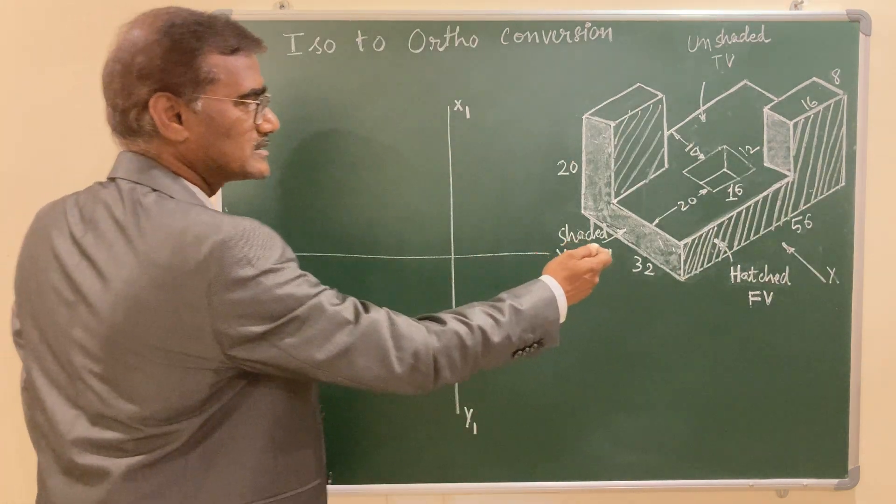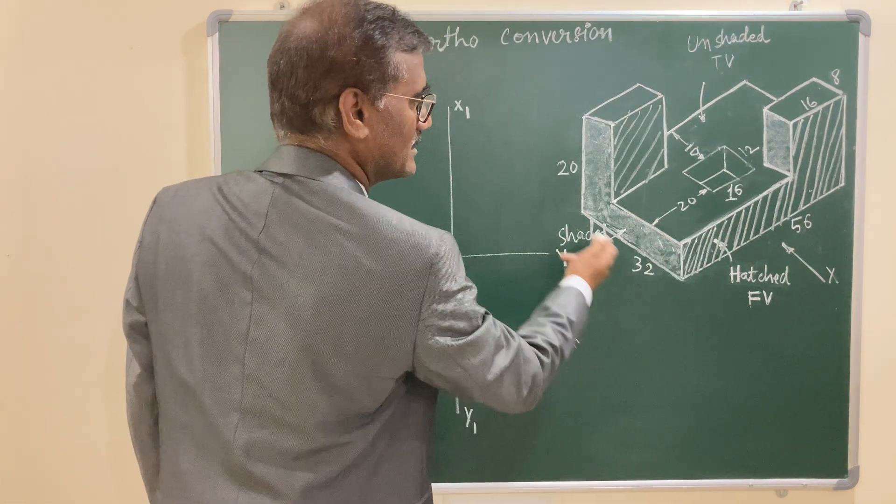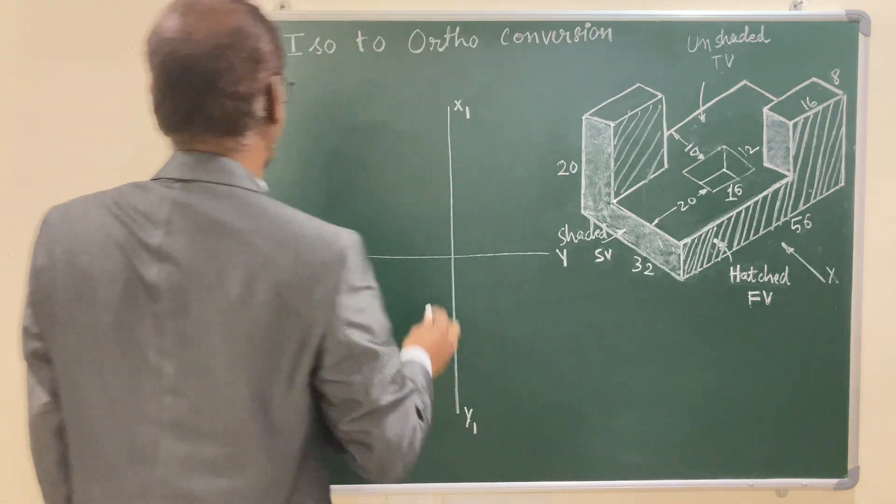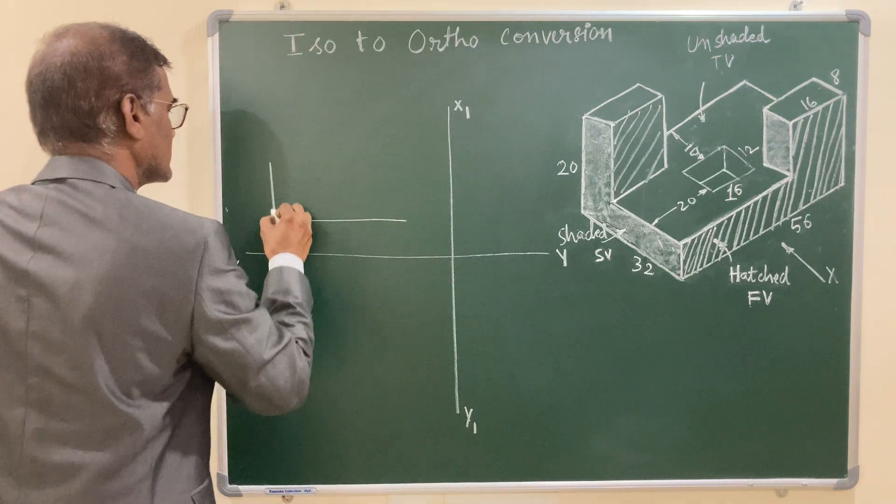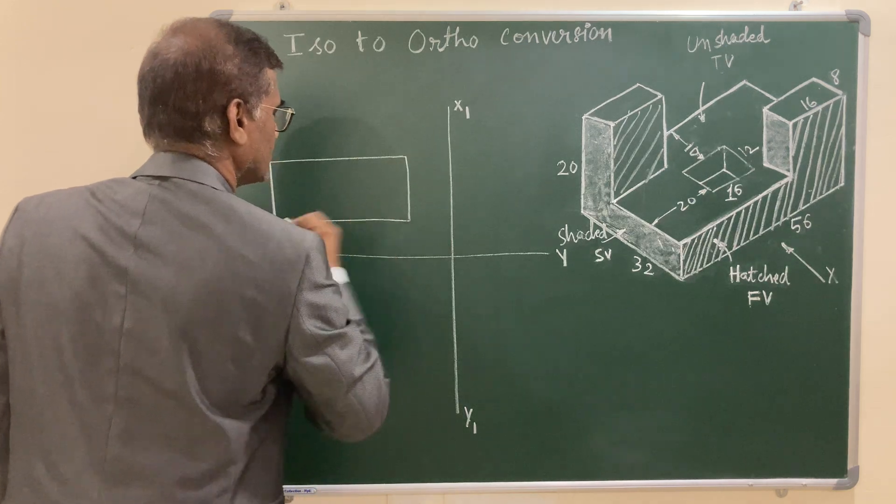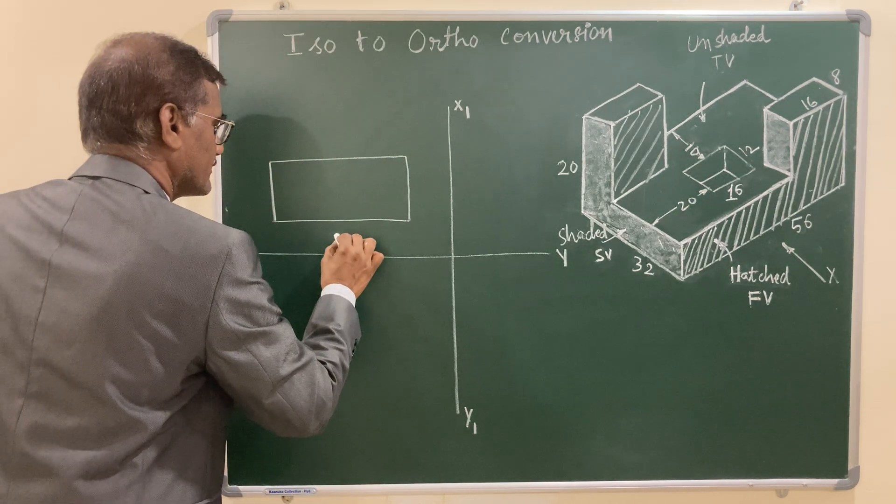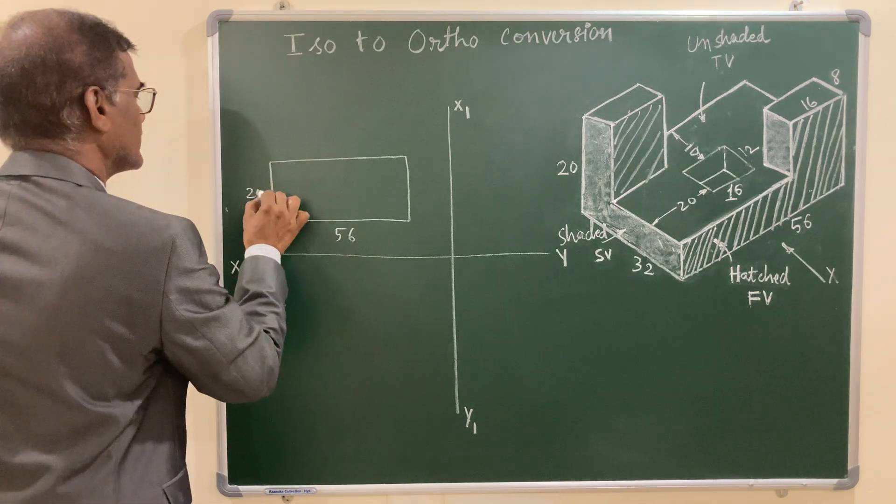And the dimensions, if you see in front view, the length is 56 and height is 20 mm. So here it is 56, it is 20 mm. So you can complete the box for the front view. This is your front view with dimension 56 and height 20.